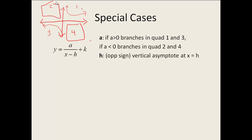h gives us our vertical asymptotes, and that comes back to our domain. If we have x minus h in our denominator, remember we can't divide by 0. So if we set x minus h equal to 0 and add h to both sides, we have a value we are not allowed to have in our domain — that is our vertical asymptote. So when you have this setup, your vertical asymptote is automatically x equals h, but you have to remember to look at the opposite sign.